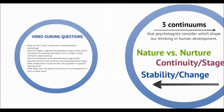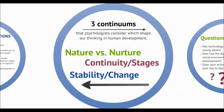I hope you are beginning to realize that adult developmental theory is a broad topic with many frameworks and models. This provides us with many implications that can be used to make some assumptions about learning in adulthood. In general, there are three big ideas or continua that psychologists consider which shape our thinking in human development.